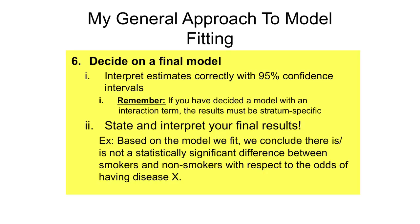Reporting the confidence interval provides information on the statistical significance of the effect as well as the precision of your estimate. Remember that if you have a model with an interaction term, you must report the effect of smoking separately — one for men and one for women. And if asked about the effect of gender, you must report this separately for smokers and non-smokers. An interaction goes both ways: you can say the effect of smoking depends on gender, or the effect of gender depends on smoking. When interpreting an effect, conclude whether there is a statistically significant difference based on your p-value or confidence interval.